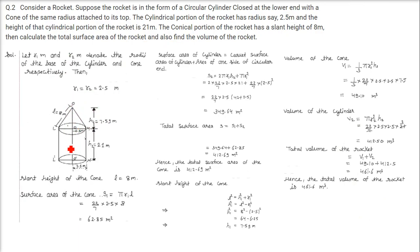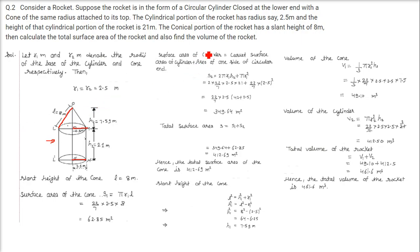Now consider a rocket in the form of a circular cylinder closed at the lower end with a cone of the same radius attached at the top. The cylindrical portion has radius 2.5 meters and height 21 meters. The conical portion has a slant height of 8 meters. We need to find the total surface area and volume of the rocket.